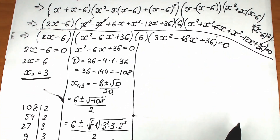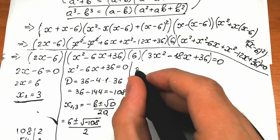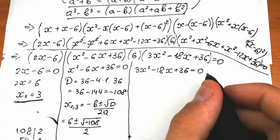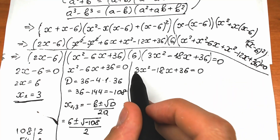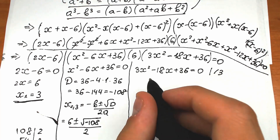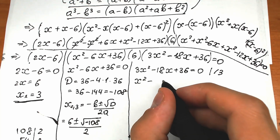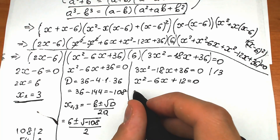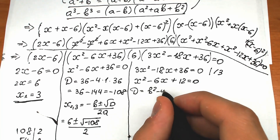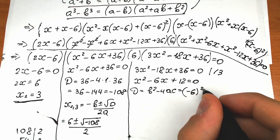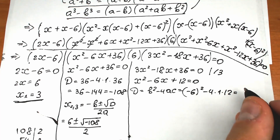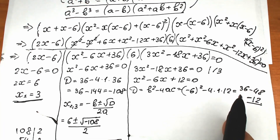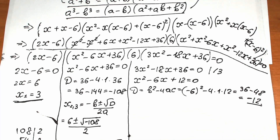For the final equation, we have three x squared minus eighteen x plus thirty-six equals zero. Dividing both sides by three gives x squared minus six x plus twelve equals zero. Computing the discriminant: negative six squared minus four times one times twelve equals thirty-six minus forty-eight, which equals negative twelve. So again we have complex roots — the fourth and fifth roots.